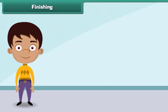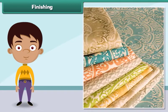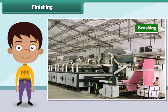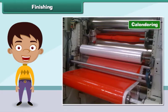The process that improves the appearance and usefulness of a fabric is known as finishing. Some important finishing treatments given to a fabric are brushing and calendaring. Brushing is the process that removes short and loose fibers from a fabric. Calendaring is the process that improves the smoothness and shine of a fabric.